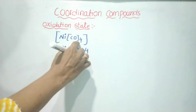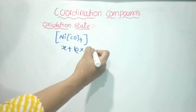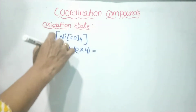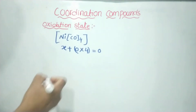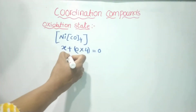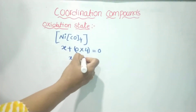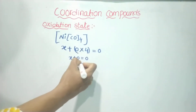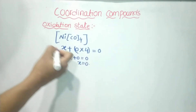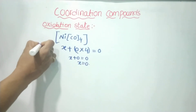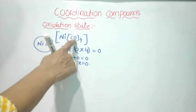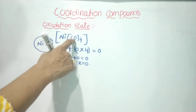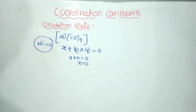If we don't have any charge on this complex, the total is zero. So X plus zero is equal to zero, which means X is equal to zero. So nickel's oxidation state is zero. CO is a neutral ligand, so neutral ligands have zero oxidation state.